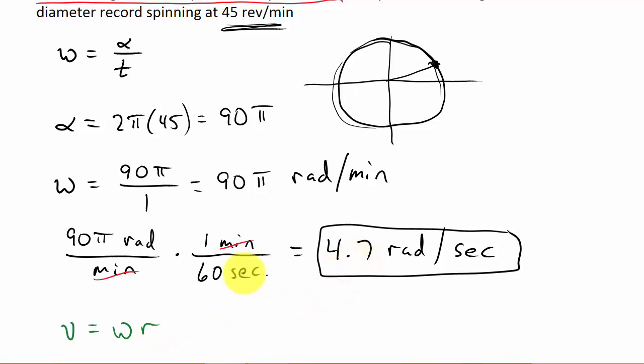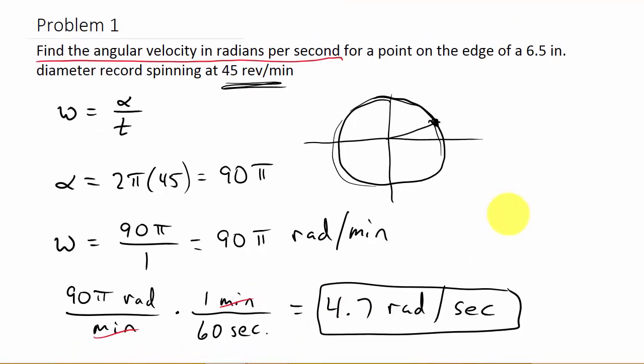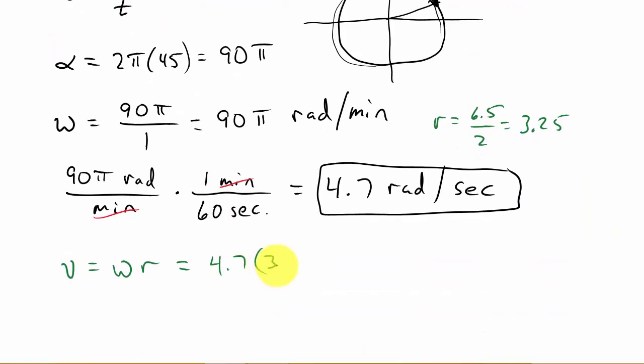So we've got the angular velocity here. So to find the linear velocity, that's going to be the angular velocity, which is 4.7, times the radius. Well, here in this problem, the radius is what? 6.5 over what? That's the diameter, so that's over 2. So the 6.5 divided by 2 is 3.25, so that's my radius. So that's 3.25, and then multiply that times 4.7, and that gives us 15.275.